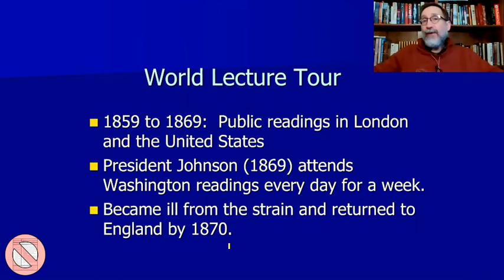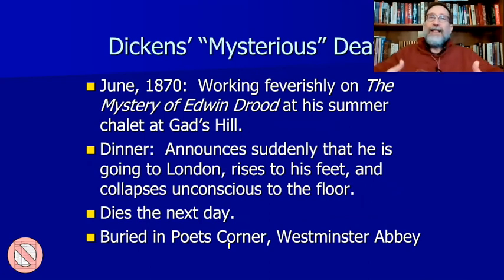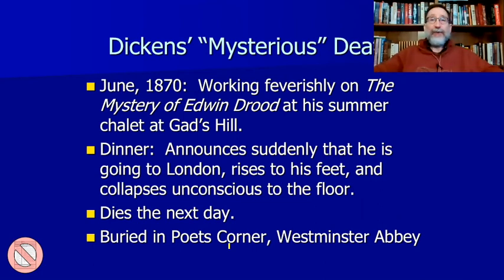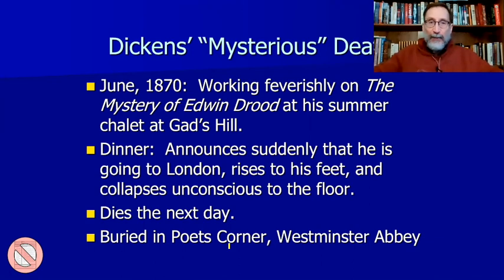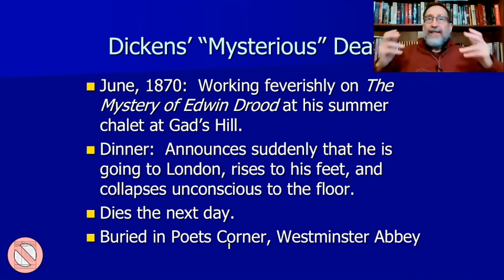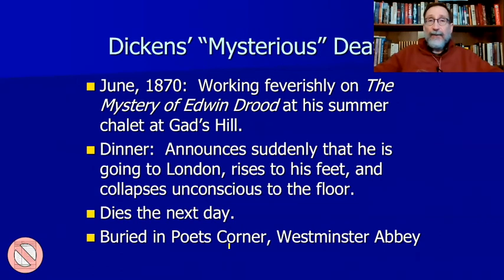The World Lecture Tour took a lot out of Charles Dickens. He comes back to England by 1870, and unfortunately he's going to meet a very unusual end. By 1870 he's working on a new type of writing — a mystery called The Mystery of Edwin Drood. You know that the most important thing about a mystery is the ending, the finding out who done it. Unfortunately, Dickens is going to die before he finishes this book, leaving the mystery completely a mystery for us. He's at dinner one night, not been well, and all of a sudden, without any prompting, he rises to his feet, says 'I'm going to London,' and collapses to the floor. He dies the next day — my understanding is he never regained consciousness.